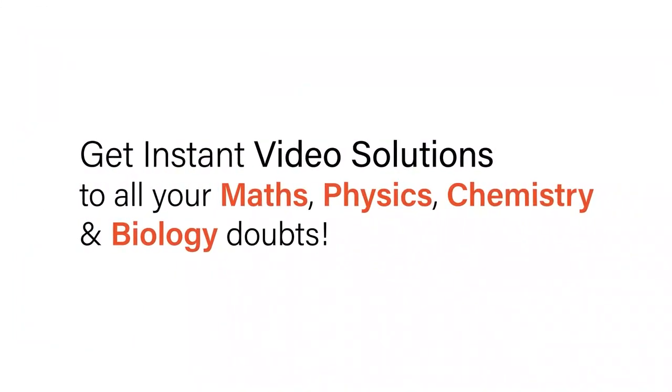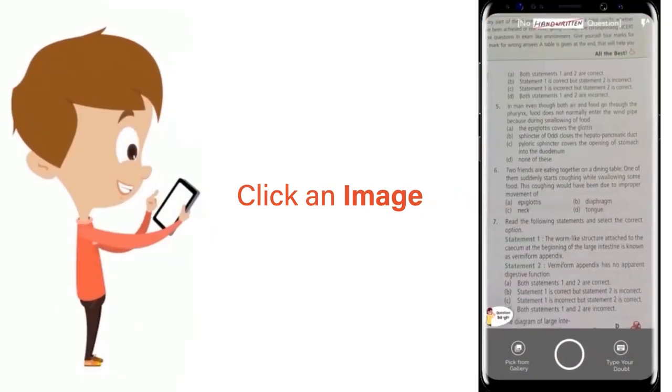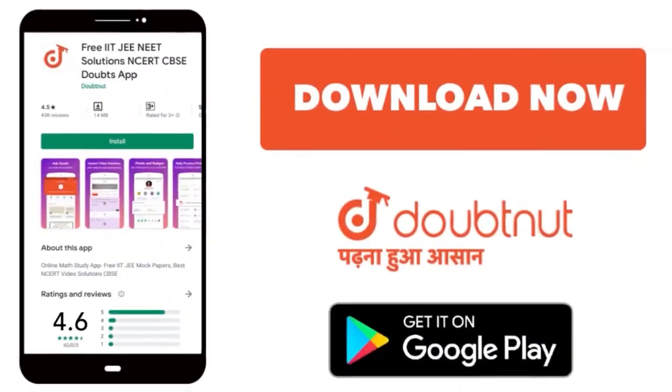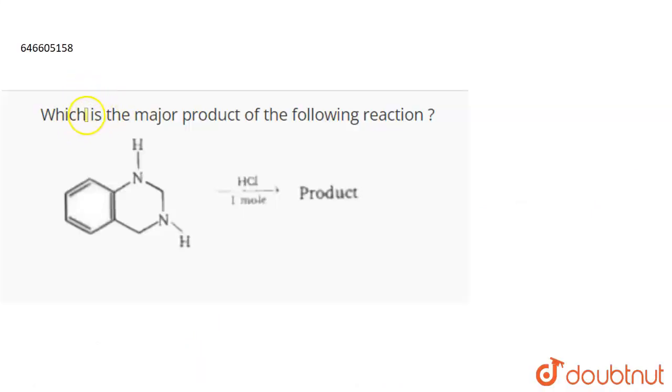With Doubtnet get instant video solutions to all your maths, physics, chemistry and biology doubts. Just click the image of the question, crop the question, and get instant video solution. Download Doubtnet app today. The question is: what is the major product of the following reaction?